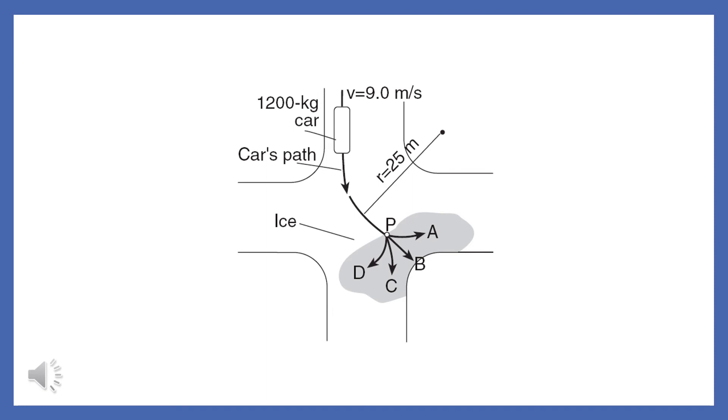The car is making a left-hand turn and hits a patch of ice at point B. The ice causes the car to lose its centripetal force. In which direction will the car move when it hits the ice? Since the car is moving in a circular path, when it hits the ice, it will move tangent to the circle towards point B.